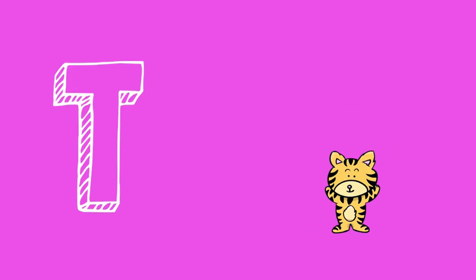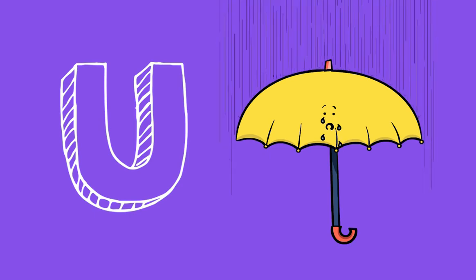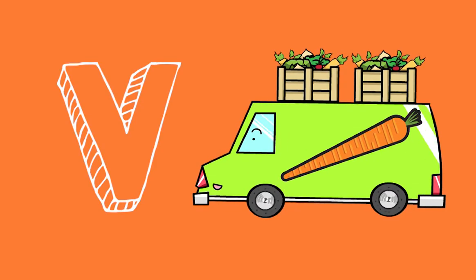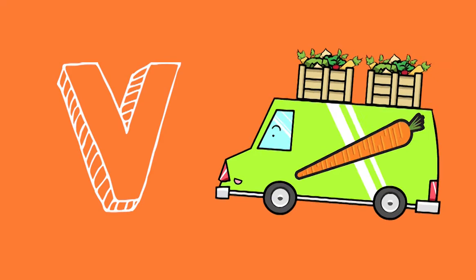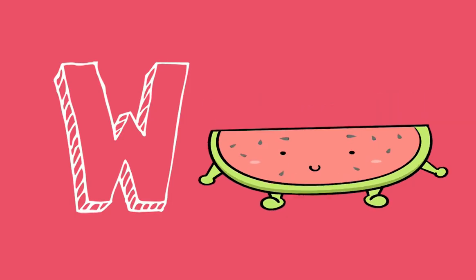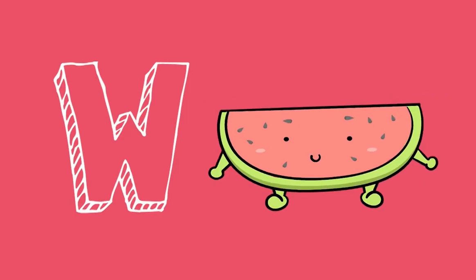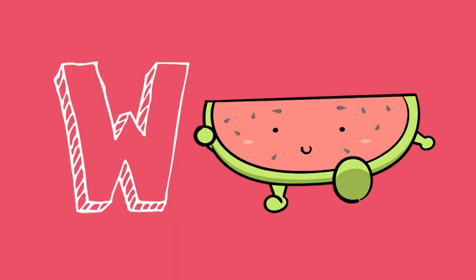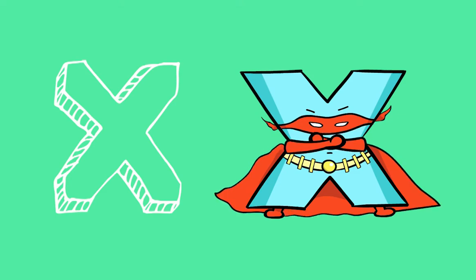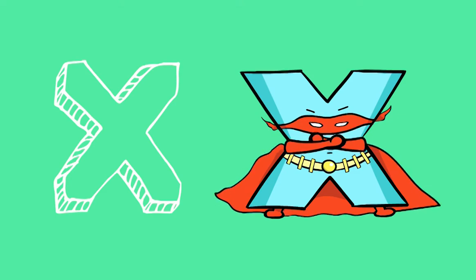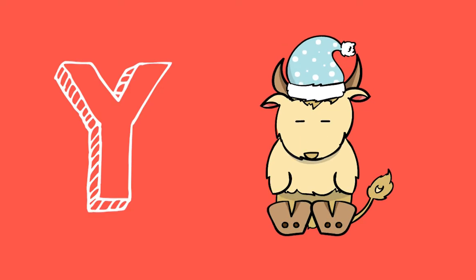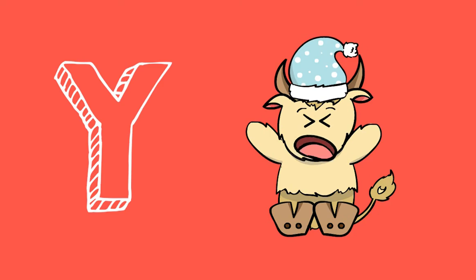T-T tiny tiger, U-U unhappy umbrella, V-V vegetable band, W-W walking watermelon.